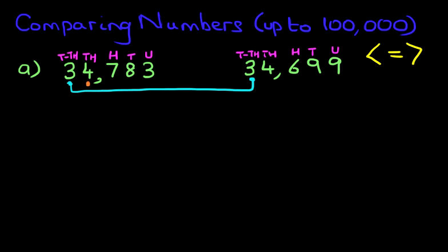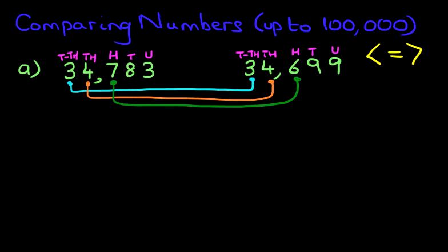We're now going to move to the thousands. Compare those two — again, they are the same. The thousands are four on the left and four on the right. Just remember, when you're comparing numbers, start on the left-hand side and gradually work your way across. Unless the numbers are identical, we will soon come to a digit that is different. We're now going to do the hundreds. We've got seven hundreds here. Let's move that across and check it here. We've got seven hundreds on the left and six hundreds on the right. So the hundreds tell us which number is larger and which is smaller.